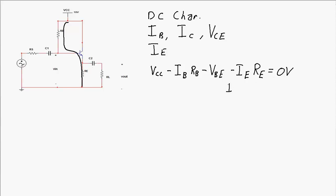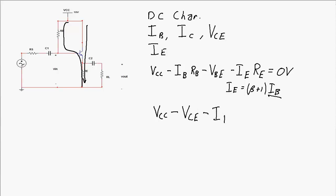Using the relationship IE = (β + 1) × IB, we substitute into the KVL equation and solve for base current. Once we have base current, we can find emitter current and collector current. Then, using the output loop — which has no collector resistor — the KVL equation is VCC minus VCE minus the voltage drop across the emitter resistor equals zero, allowing us to solve for VCE and complete the DC analysis.